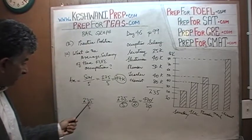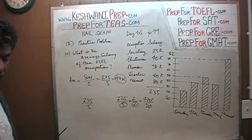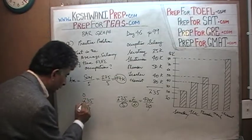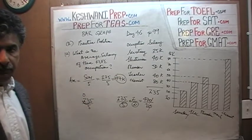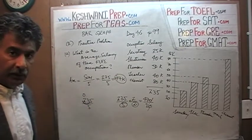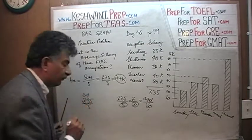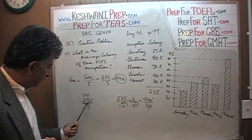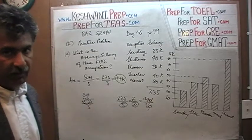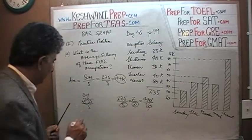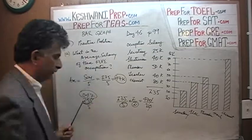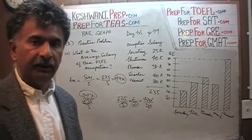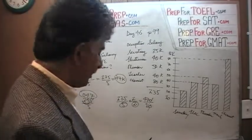Another way to divide 235 by 5 is the classical long division method. How many fives in two? Two has no fives — that two goes and joins the three, becomes twenty-three. How many fives in twenty-three? Twenty-three has four fives; four fives are twenty. The remaining three joins the five, becomes thirty-five. How many fives in thirty-five? Thirty-five has seven fives. So it's $47,000. That's our first conclusion: the average of the five professions is $47,000.